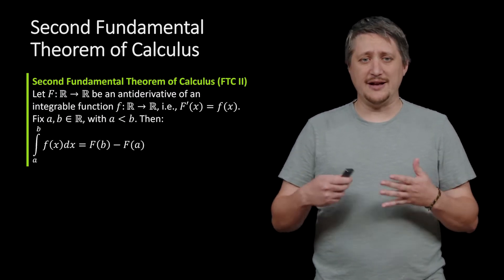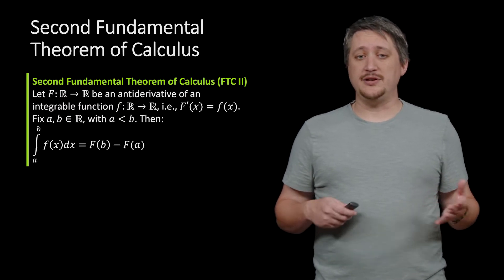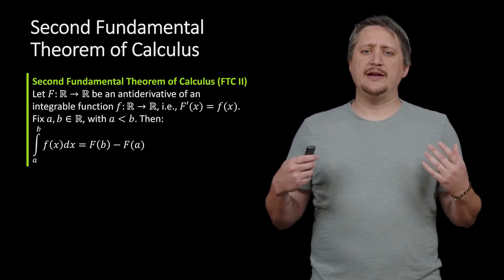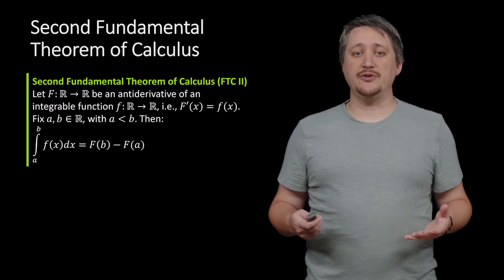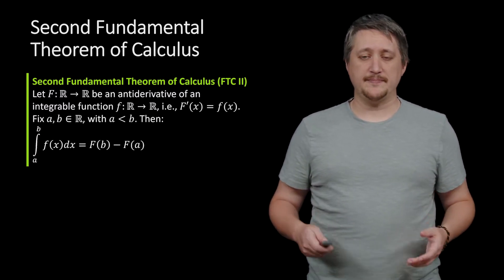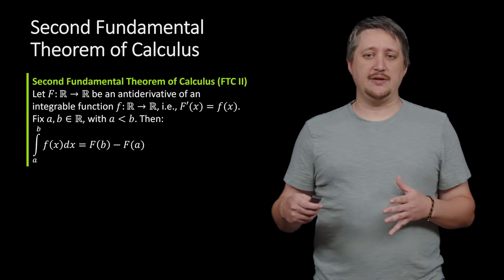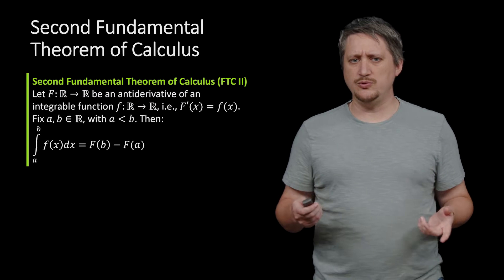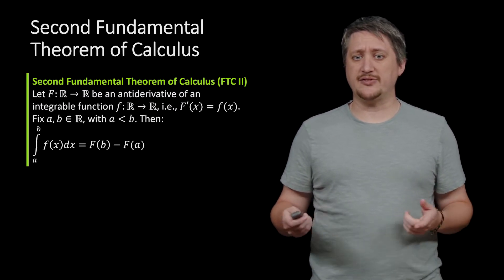As usual, let capital F be a function from R to R, so a real-valued function, and assume that it's some antiderivative of some function f. Meaning that if you take the derivative of capital F, you get little f. Also fix two values a and b with a less than b.